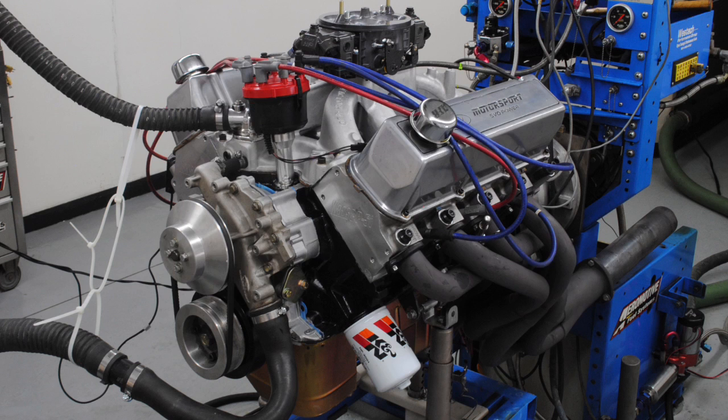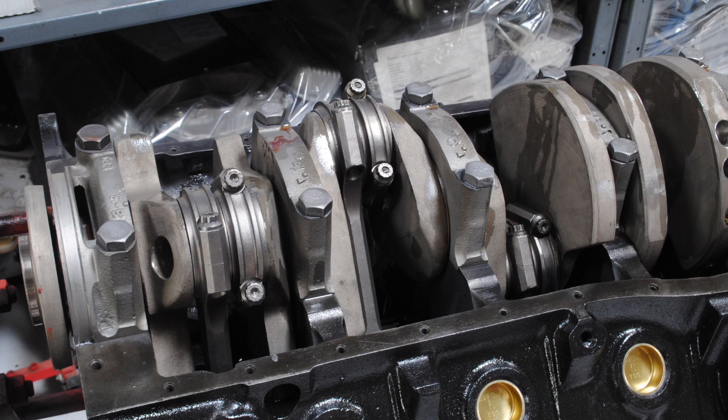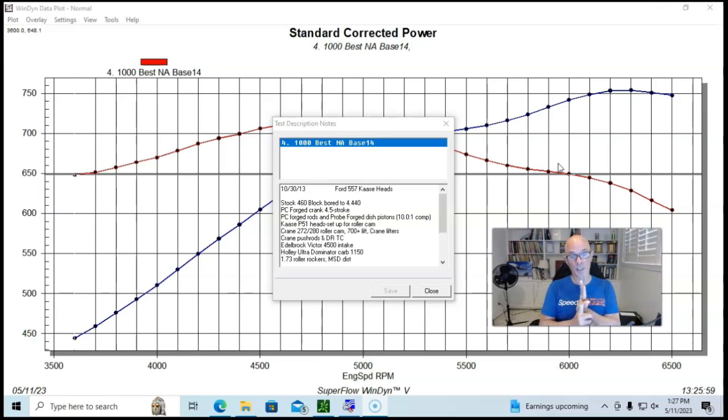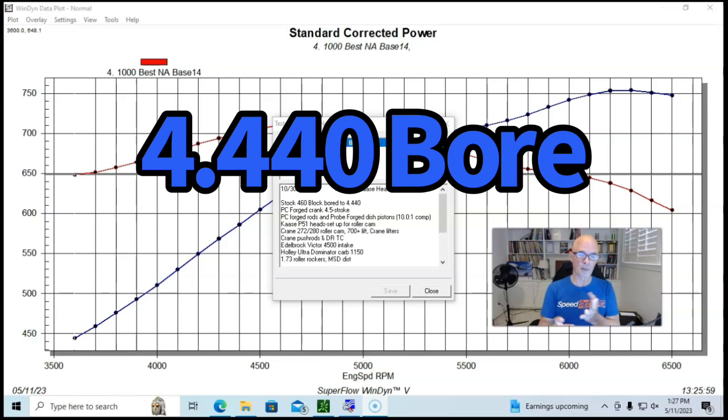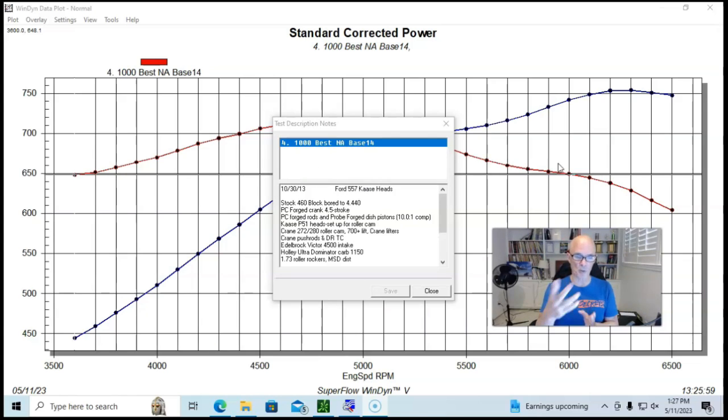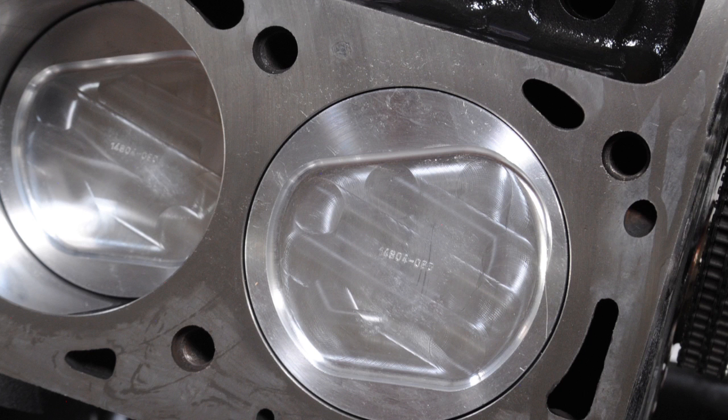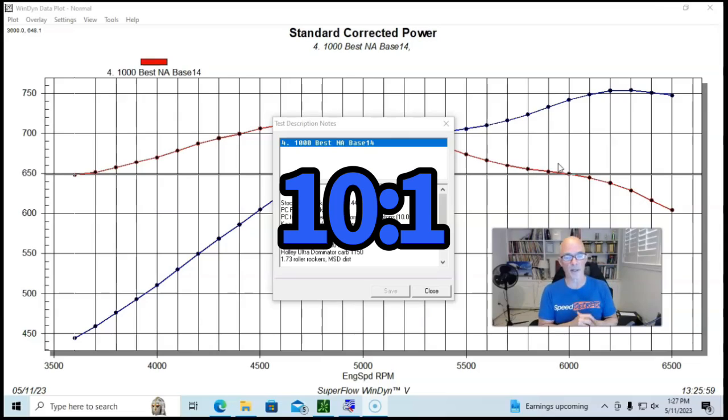Okay, let's jump right into our 1,000 horsepower combination. This is actually another 557 cubic inch stroker big block Ford. We started out with a stock 460 block. It was bored to 444. We installed a four and a half inch stroke crank.